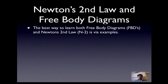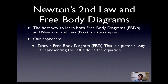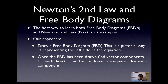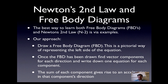The best way to learn is with an example. Our approach will be: first, draw a free body diagram — a pictorial way of representing the left side of Newton's law, sigma F. Then find the vector components in each direction and write one equation per component. Finally, solve those equations. Draw a picture, set up equations, solve equations — that's the three-step process.